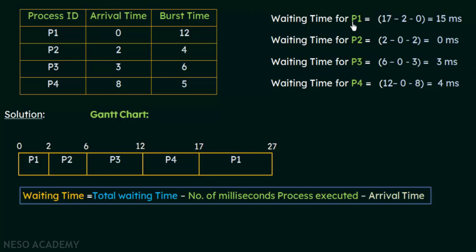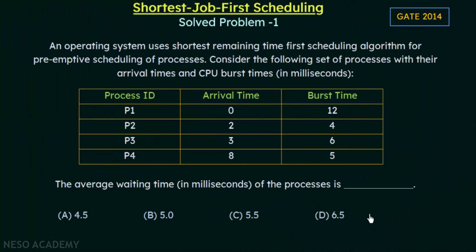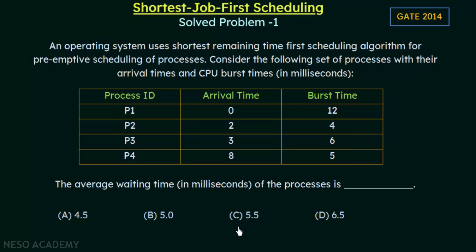Now we can calculate the average waiting time: (15 plus 0 plus 3 plus 4) divided by 4, which gives us 5.5 milliseconds. Looking at the options, option C is 5.5 milliseconds, which is the answer. This is how we calculate the average waiting time for an operating system using shortest remaining time first preemptive scheduling.